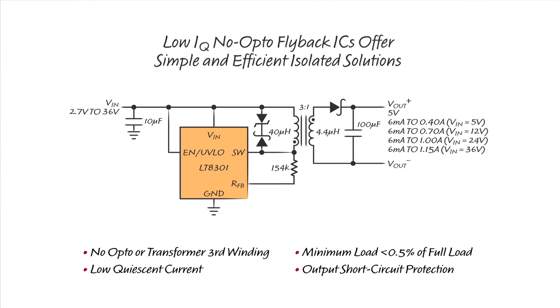The No Opto Flyback ICs feature low quiescent current, which improves light load efficiency and reduces no-load input standby current. The minimum load requirement is typically less than 0.5% of the full output. These ICs also feature output short-circuit protection.